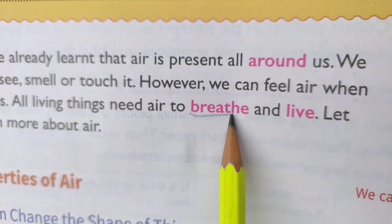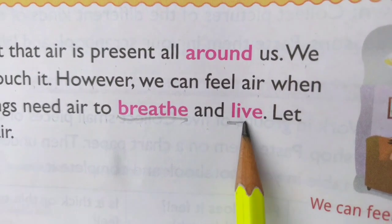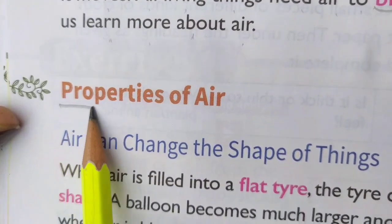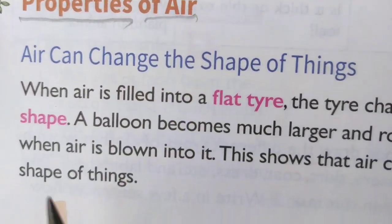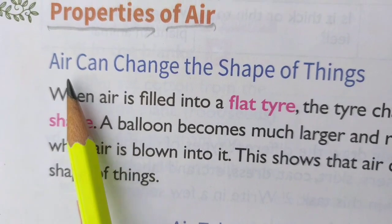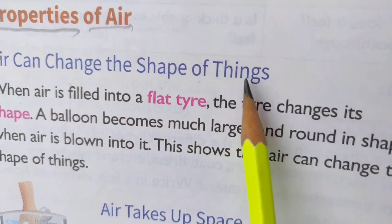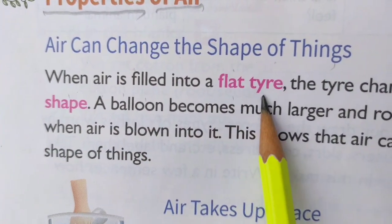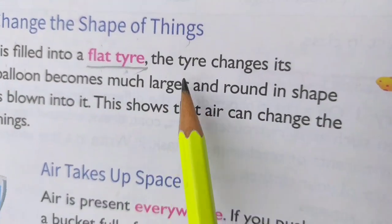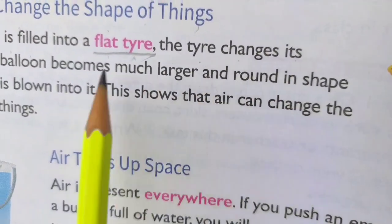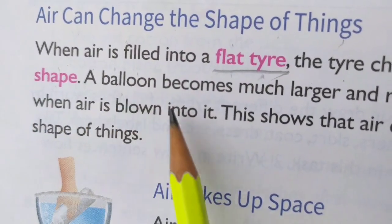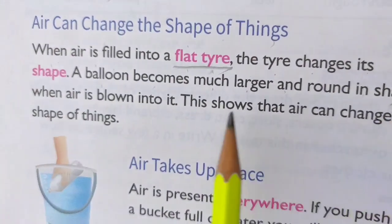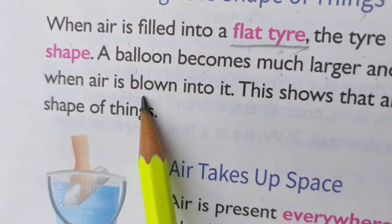Children learn the spelling of 'breathe' and 'live'. Let us learn more about air. Properties of Air: Air can change the shape of things. When air is filled into a flat tire, the tire changes its shape. A balloon becomes much larger and round in shape when air is blown into it.